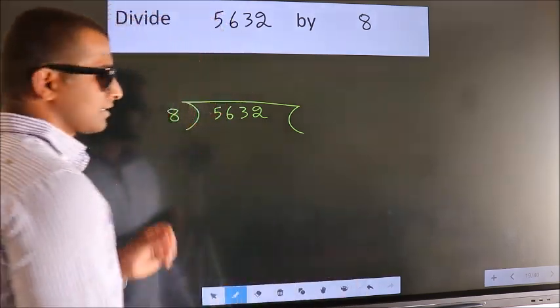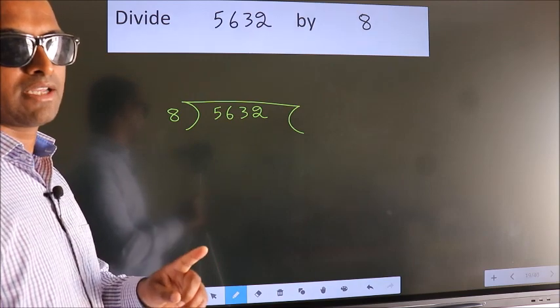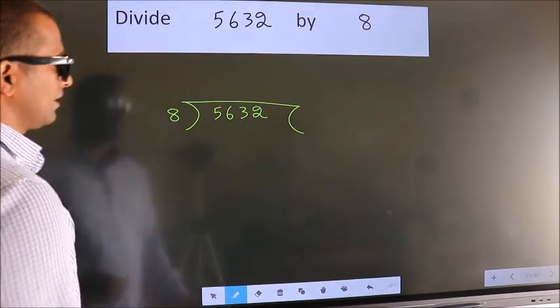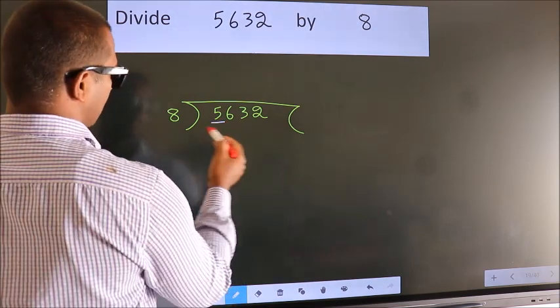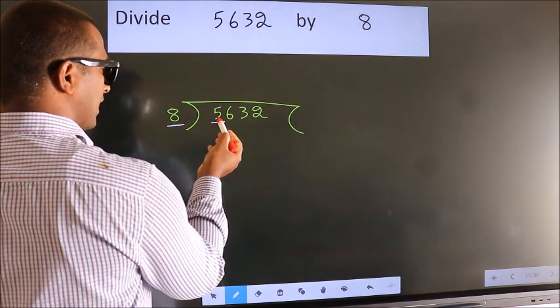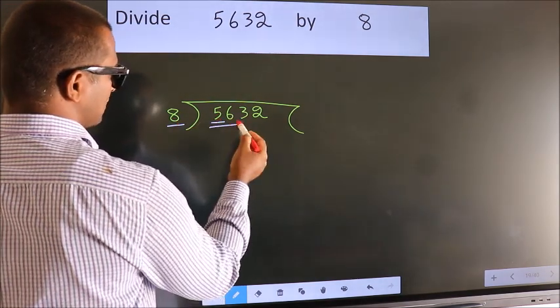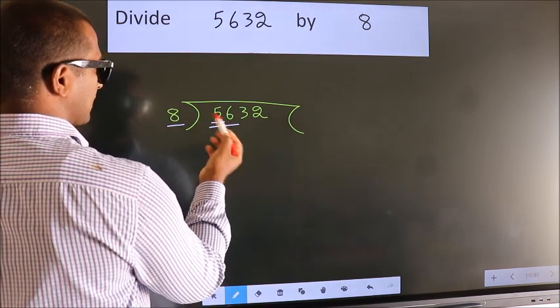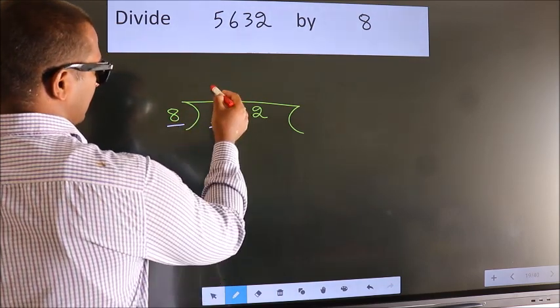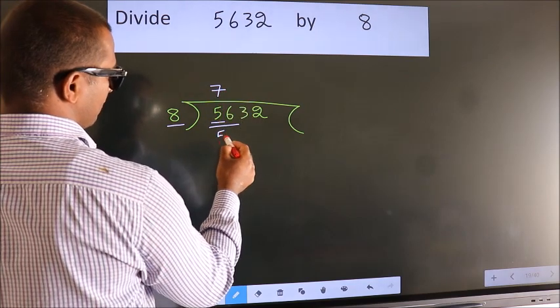This is your step 1. Next, here we have 5, here 8. 5 is smaller than 8, so we should take two numbers, 56. When do we get 56? In the 8 table. 8 times 7 is 56.